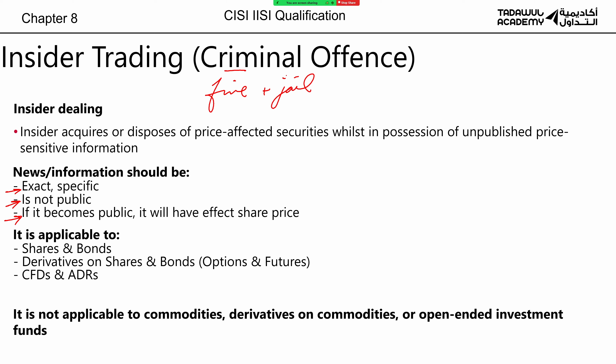They are applicable to shares — as in the example given, you buy shares of your company and trade on them. They're also applicable to bonds, so whenever you're buying shares and bonds, watch out, you might be committing insider trading. They also apply to derivative contracts on shares and bonds, and CFDs and ADRs, which are types of derivatives on shares. All of these securities are protected under insider trading laws, so be very careful when you trade in them.